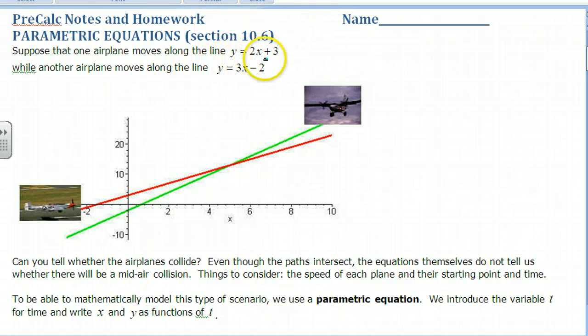Now if you notice both these equations, we have one airplane that moves along this line and another airplane that moves along this line. And so we would ask, are these airplanes going to crash?